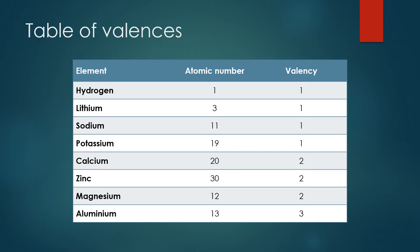In this table we will find the most important valences — the most important ions we will use in most calculation problems — like lithium, sodium, potassium, calcium, zinc, and magnesium. Here you will find the atomic weight, and here is the valency of the ion. N will equal the valency, but note that N should be the valency of the positive ion multiplied by its number.